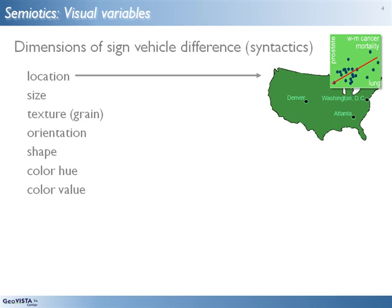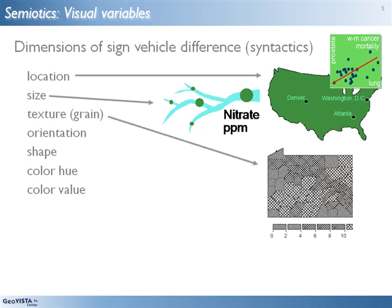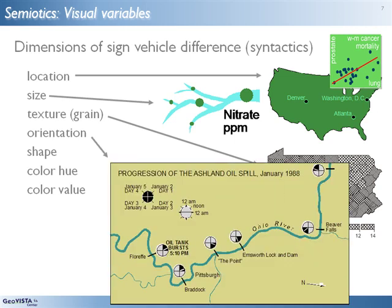Location is position in relation to some coordinate framework. It can represent position in geographic space or in data space. Size of sign vehicles is relative and can depict amounts. Texture is the coarseness or grain of patterns; it can depict rank order or amount, but not as effectively. Orientation relates to a reference direction such as up or north, and its prototypical use can be seen in the hands of an analog clock.